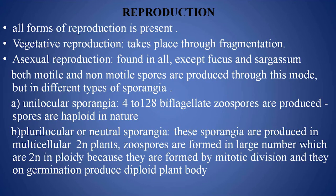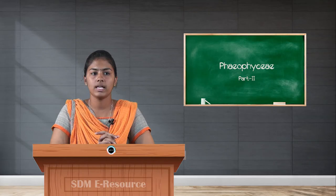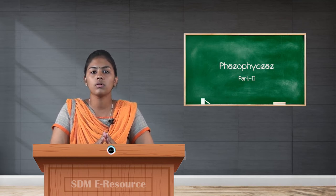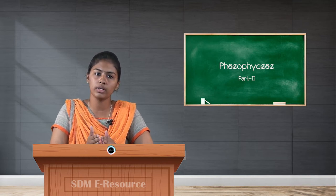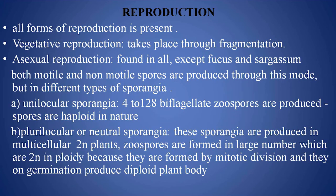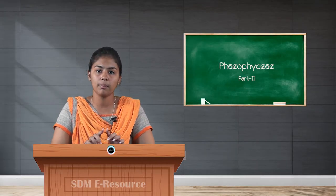These fragmented bodies re-germinate into a whole new thallus. Asexual reproduction is found in all members of Phaeophyceae except in the case of Fucus and Sargassum. Both motile and non-motile spores are found in this mode of reproduction, in different types of sporangia. The first is unilocular sporangia, which contains 4 to 128 biflagellate zoospores that are haploid (n) in nature.